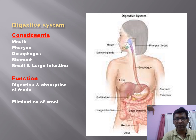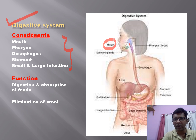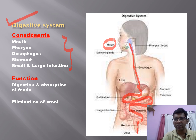The digestive system helps in digestion, starting from food intake to stool elimination. Its constituents run from the mouth, pharynx, esophagus, stomach, small intestine, large intestine, up to the anus. Food is taken in at the mouth, absorption occurs along the digestive tract, and stool is formed and eliminated through the anus. Their function is digestion and absorption of foods and elimination of stool.